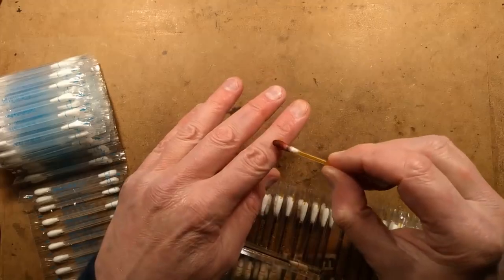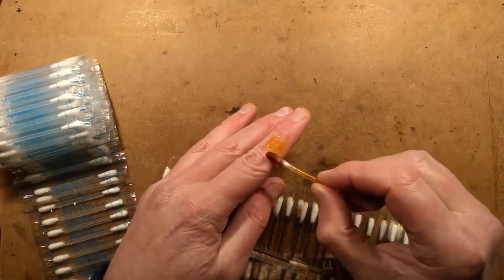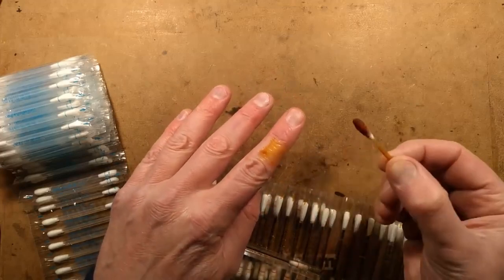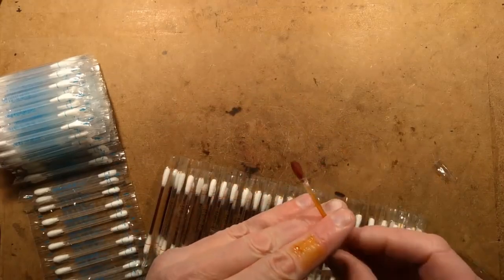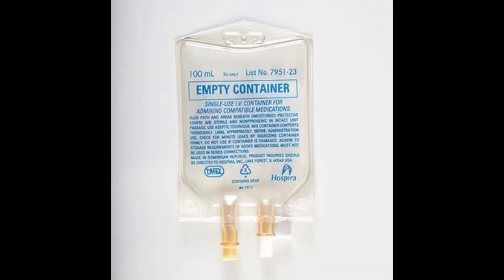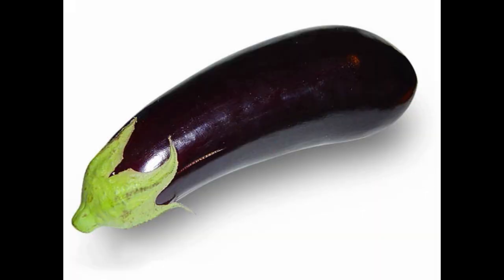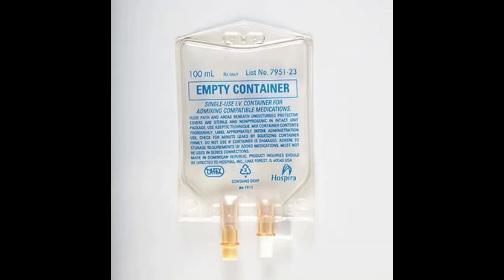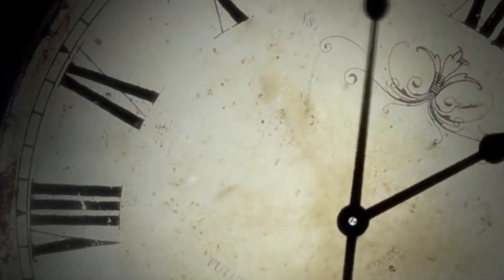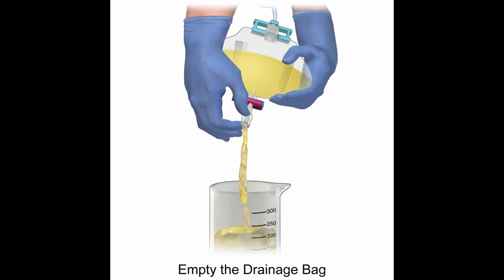Step 2: Use povidone iodine swabs to clean the urethral area. Step 3: Place sterile urine bag over labia and penis. Step 4: Reclean and replace urine bag if no urine in 30 minutes. Step 5: Empty bag into a sterile container.